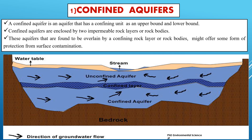A confined aquifer is bounded on both its upper and lower surfaces by confining layers, also known as aquitards or aquicludes. These confining units are impermeable or significantly less permeable layers of rock or sediment that restrict the flow of water into and out of the aquifer. The impermeable layers typically consist of materials like clay, shale, or dense rock. The water in a confined aquifer is typically under greater pressure than in unconfined aquifers due to the weight of the overlying impermeable layers and the confined space. The impermeable layers above act as a protective barrier against contaminants from surface activities.